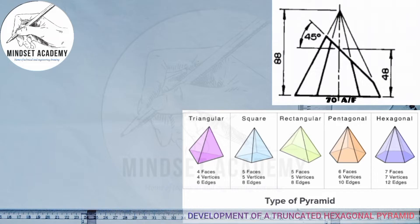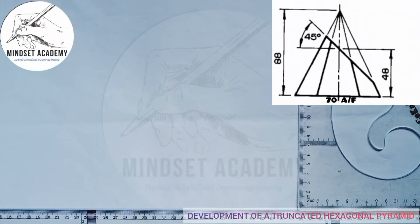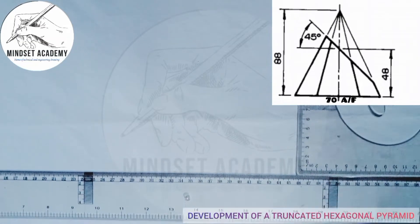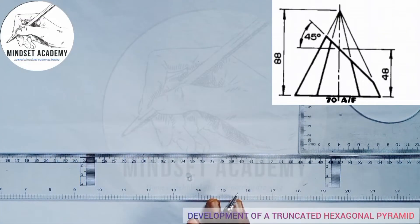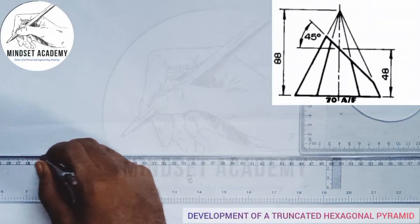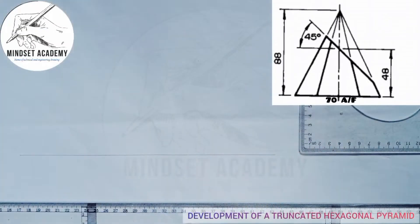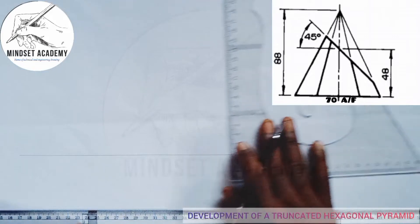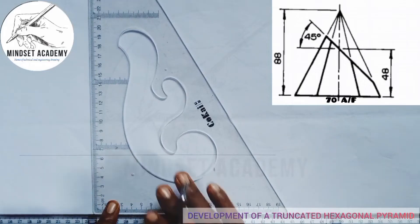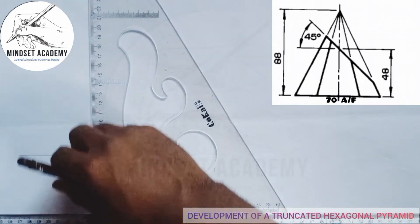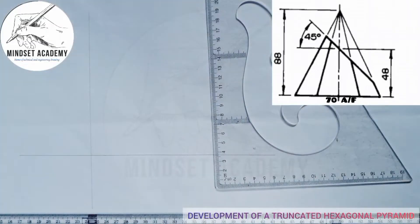First of all you start from the plan. I will first draw my horizontal line this way, then draw a vertical line too. You can see that. We are told that we look at 70 millimeters across flat.